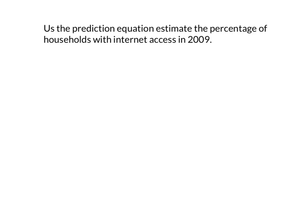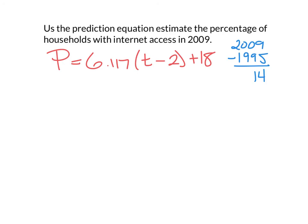So, now we can use our prediction equation to estimate the percentage of households with internet access in 2009. We have our prediction equation as being p equals 6.117 times time minus 2 plus 18. And if we want to predict that percentage in 2009, remember that our time is the time since 1995. So, start off by taking 2009 and subtracting 1995. That would give you 14 years.